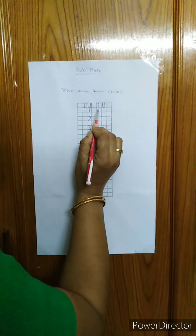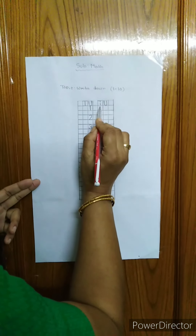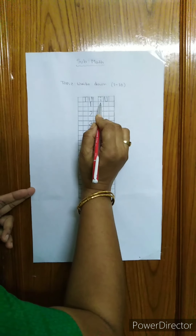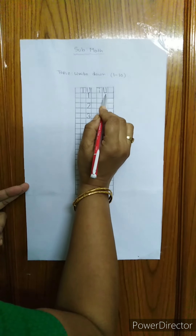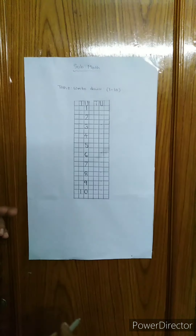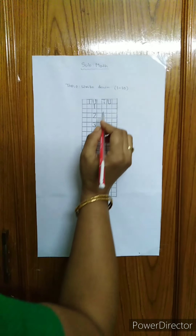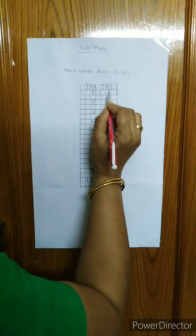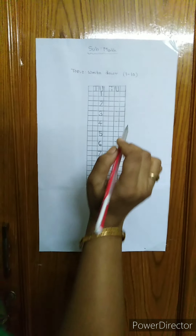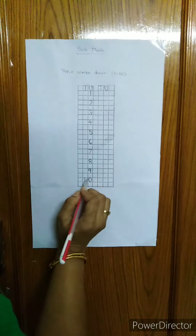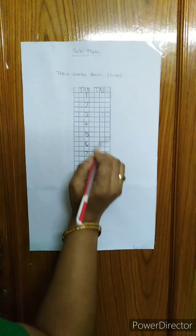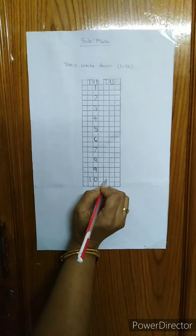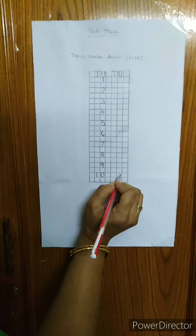This is T and this is U. T means tens and U means unit. Okay? Remember that. I will write 1 digit. So, 1, 0, 10 — the first digit I will write under T, and the other digit I will write under U.